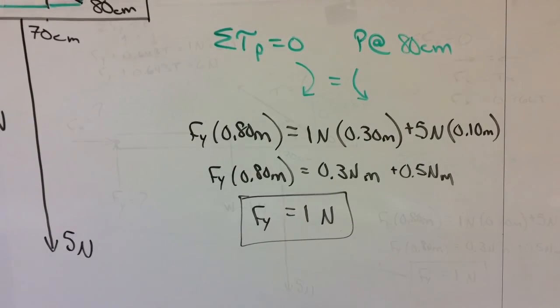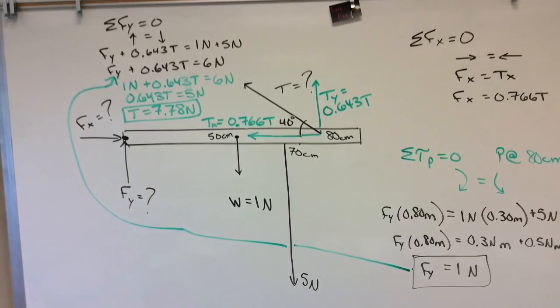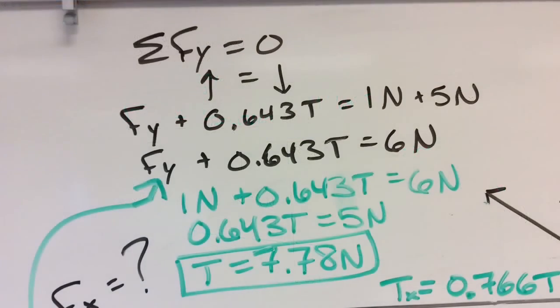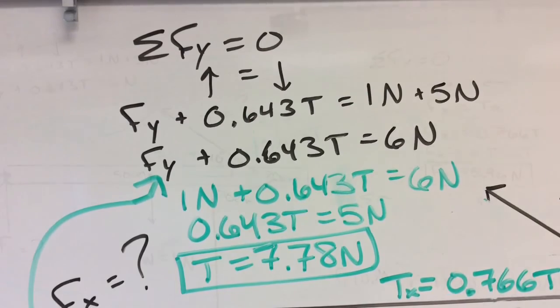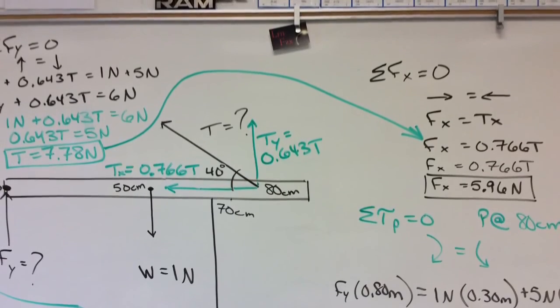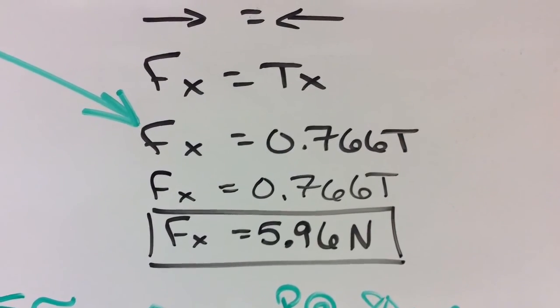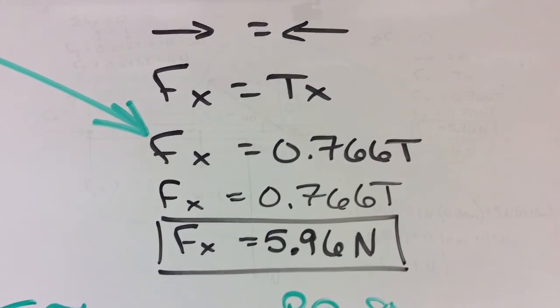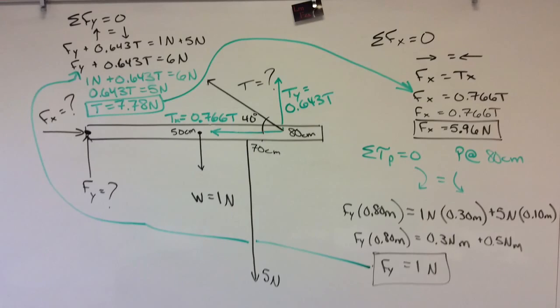Solving that equation leaves you with 1 newton for Fy, and then you can take Fy and substitute it into the first condition in the y direction and solve for the tension, and then take the tension and substitute that into the first condition in the x direction to find Fx. You have now solved for Fx, Fy, and the unknown tension. Problem's done.